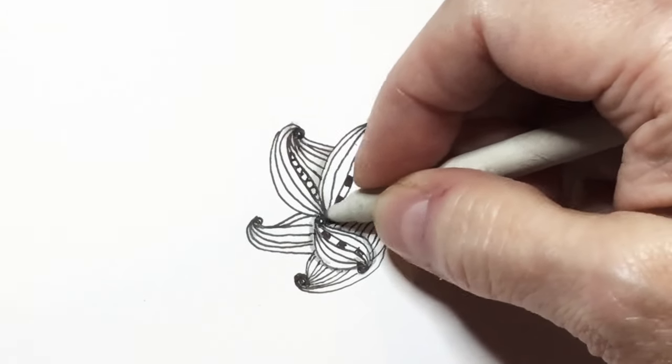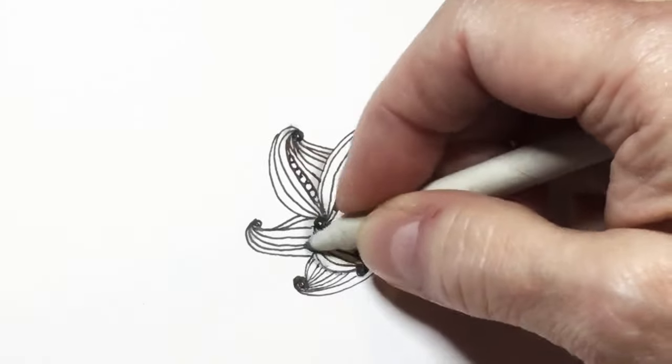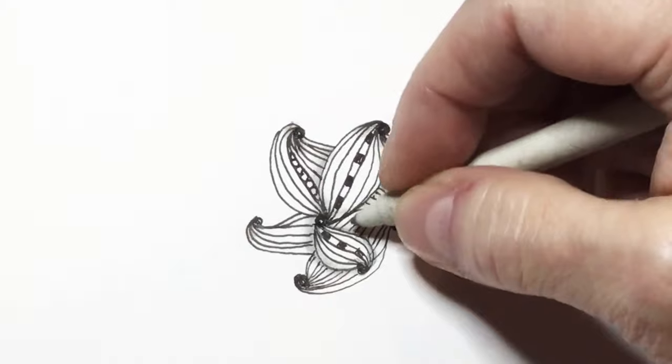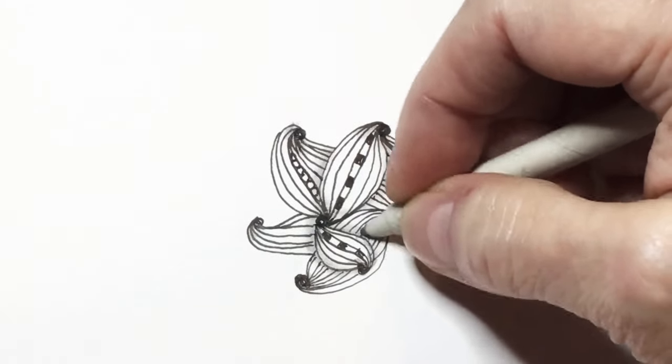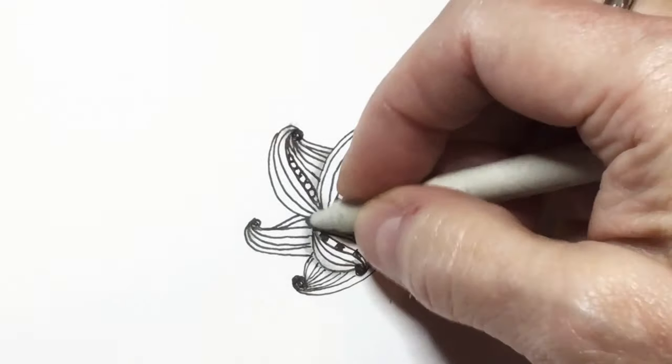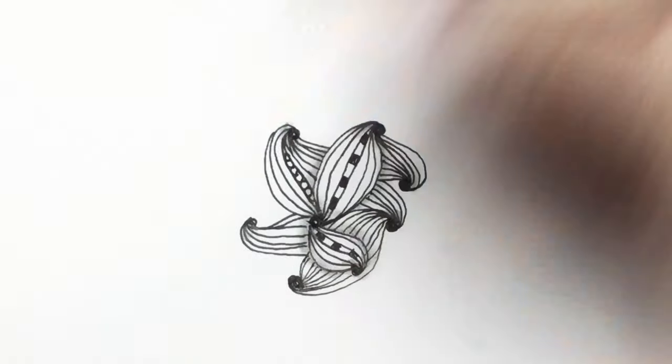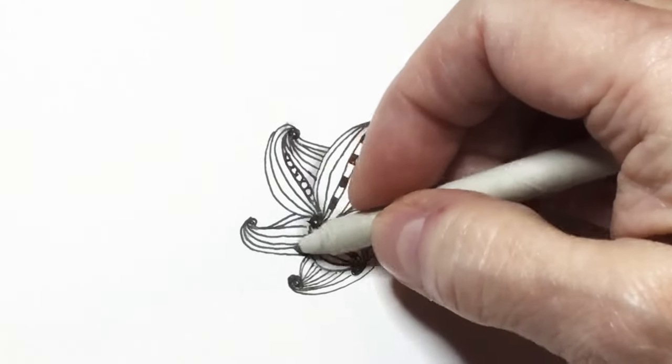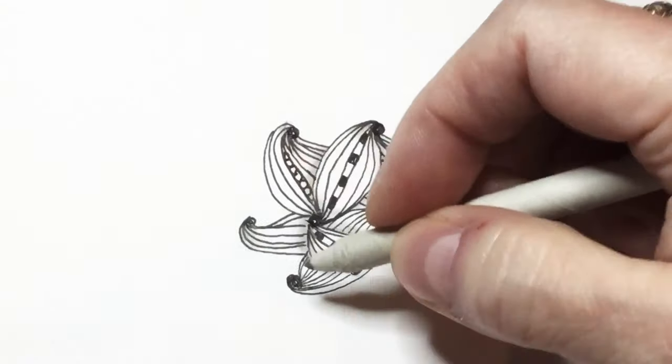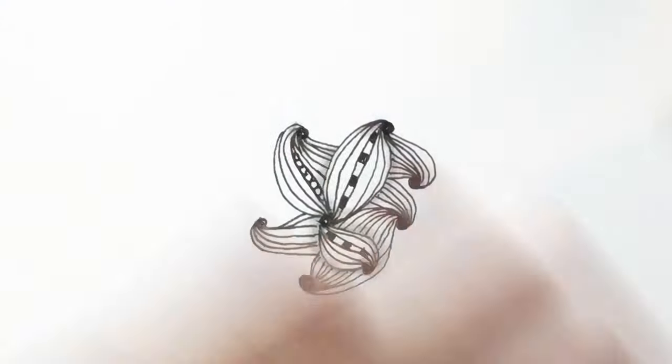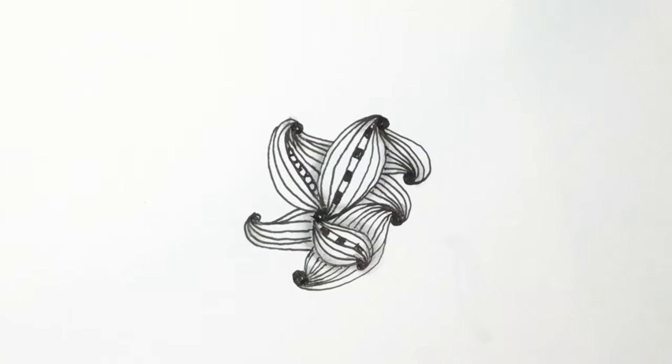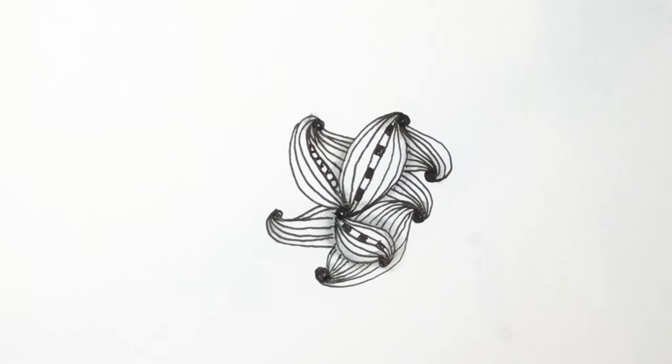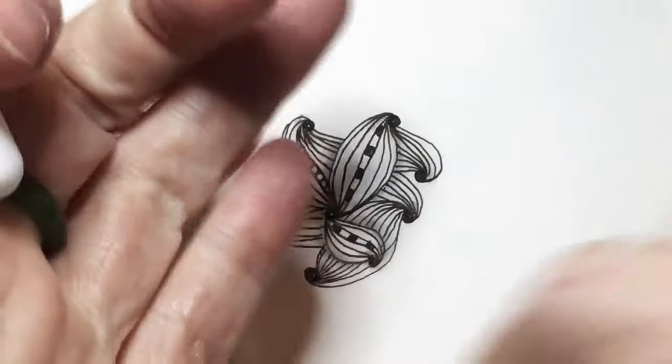And you can see just a tiny bit of graphite here really gives this tangle a lot of dimension and a real much more of a 3D look. Oops, I'm going to have to get the mono zero out. Now the other thing you can do as I mentioned...